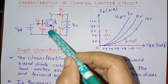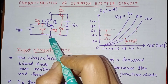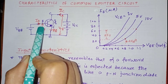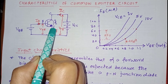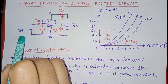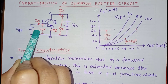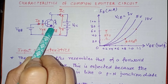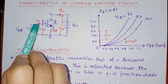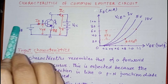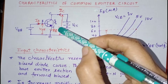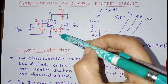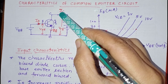Here the emitter terminal is kept common between the input and output side. The base-emitter junction is forward biased by battery VBB. VBE is the voltage between base and emitter junction, and IB is the input current. VCE is the voltage between collector and emitter, and IC is the output current.